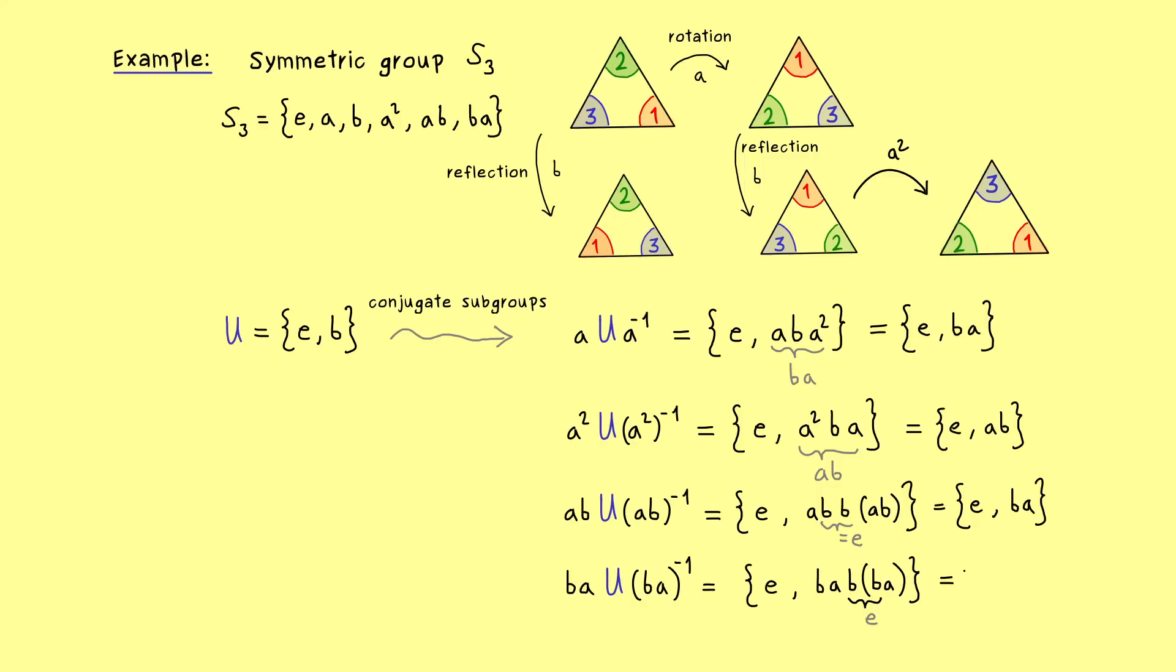So what remains is simply ba squared. And there please check that this is equal to ab. So also there we don't get a new subgroup out.